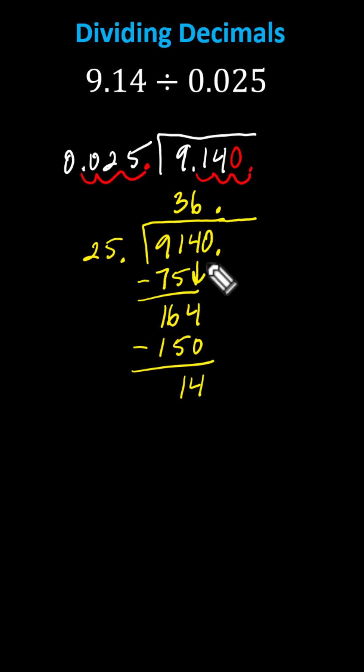We bring down the next digit, which is 0, and repeat the process. We determine how many 25s are in 140, which is 5. 5 times 25 equals 125, which we place below the 140, and again, subtract. 140 minus 125 is 15, which again, is less than 25, so the 5 is correct.